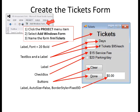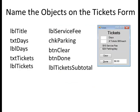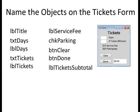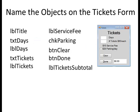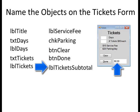Set a label, a text box and label for days, a text box and label for number of tickets, a label to say $15 service fee, a checkbox (the text for the checkbox is already part of the checkbox), and two buttons for clear and done. Also add a label and set auto size to false and border style to Fixed 3D. Here are the names: LBL title for the title; TXT days and LBL days; TXT tickets and LBL tickets; LBL service fee; CHK parking for the checkbox; BTN clear and BTN done for the buttons; and LBL tickets subtotal for the output label at the bottom.